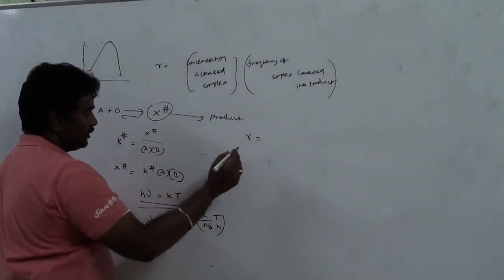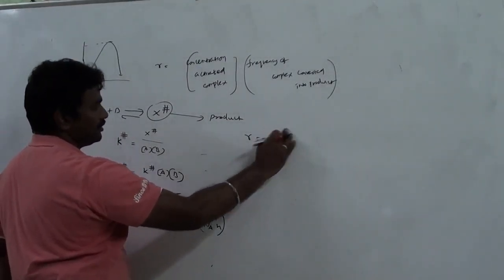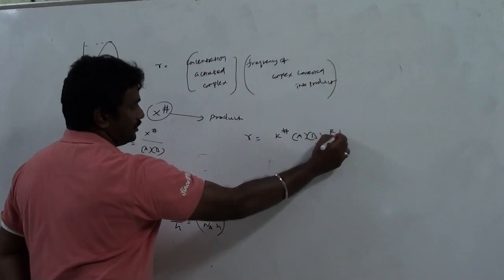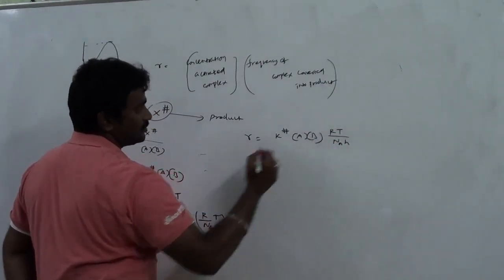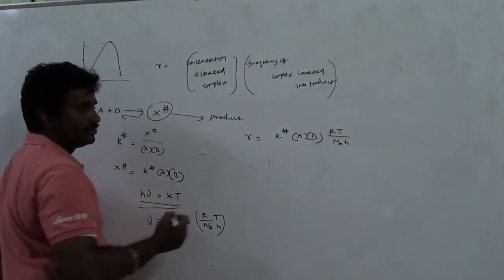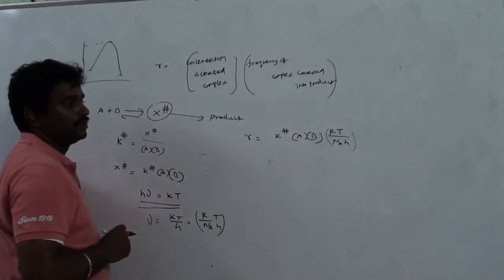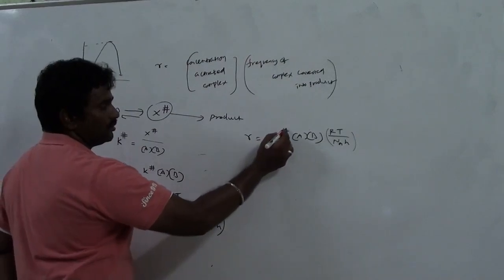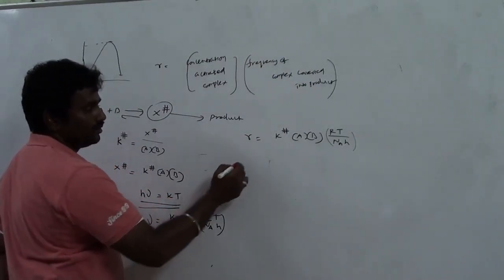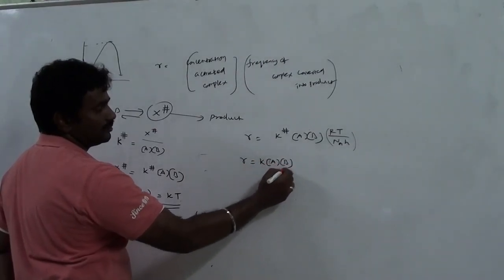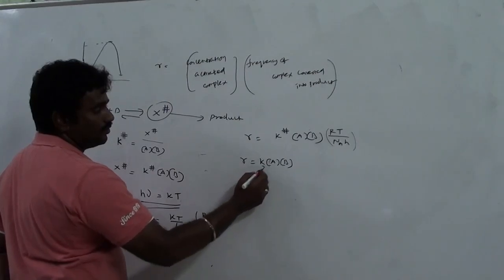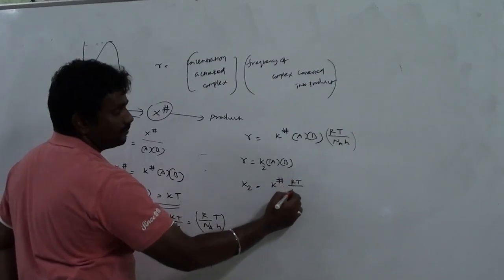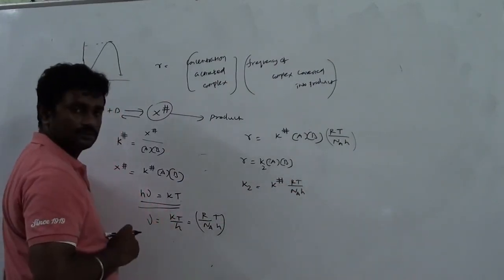How about the rate? The rate will become ν times [X‡], which equals K‡ times [A][B] times (RT/NₐH). So the overall rate constant K₂ equals K‡ times RT divided by NₐH. This is the second-order rate constant expressed in terms of the equilibrium constant for transition state formation.